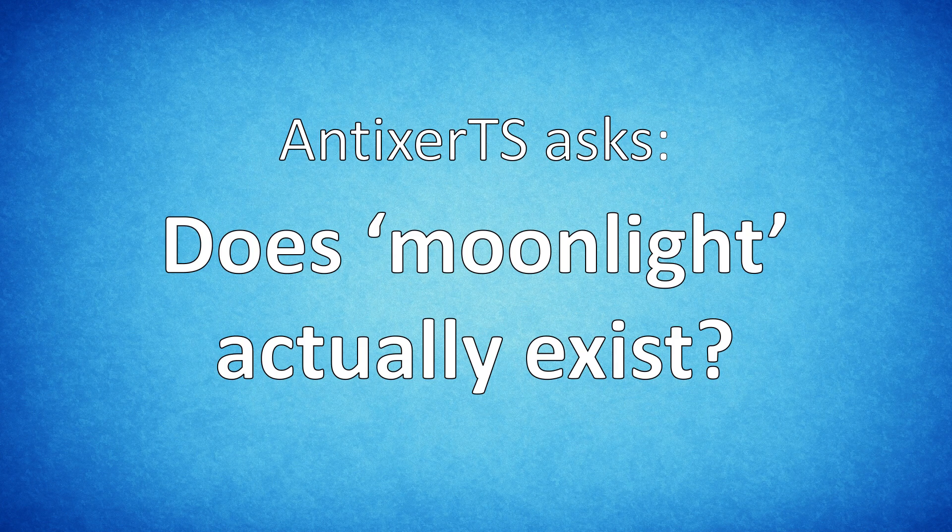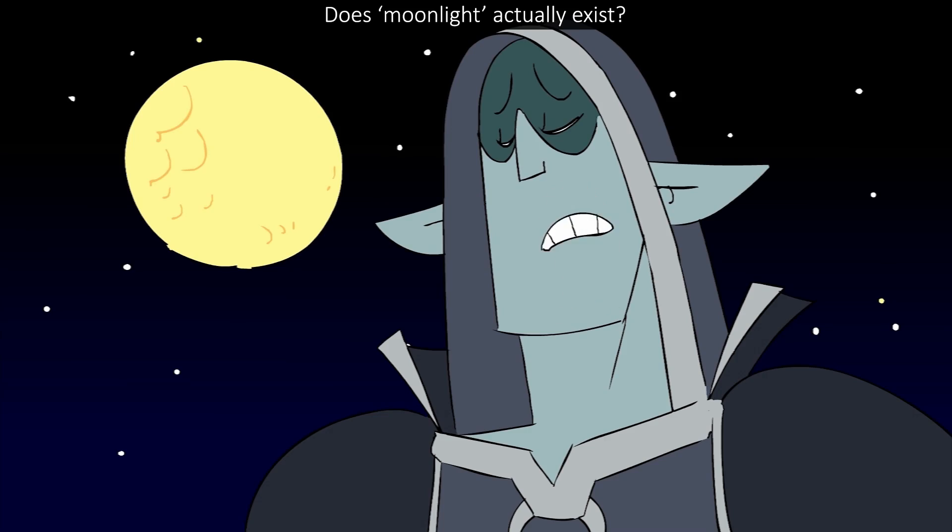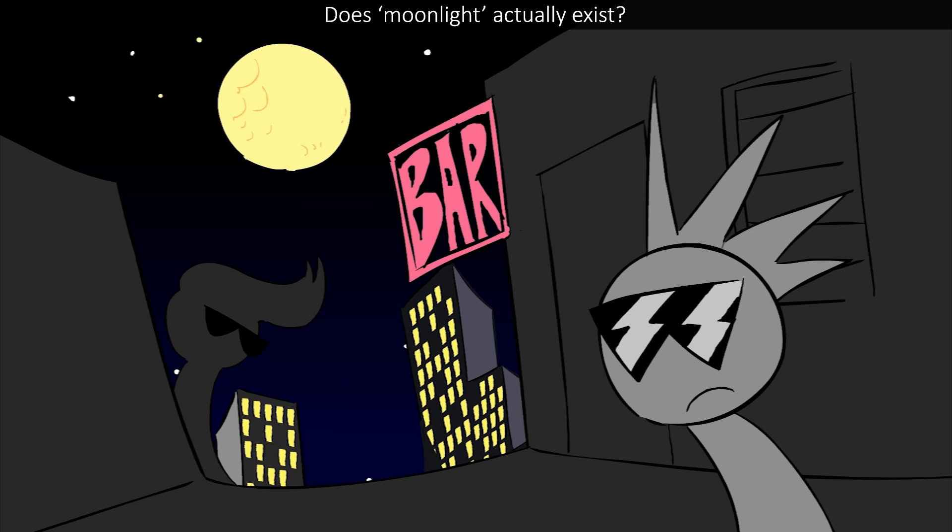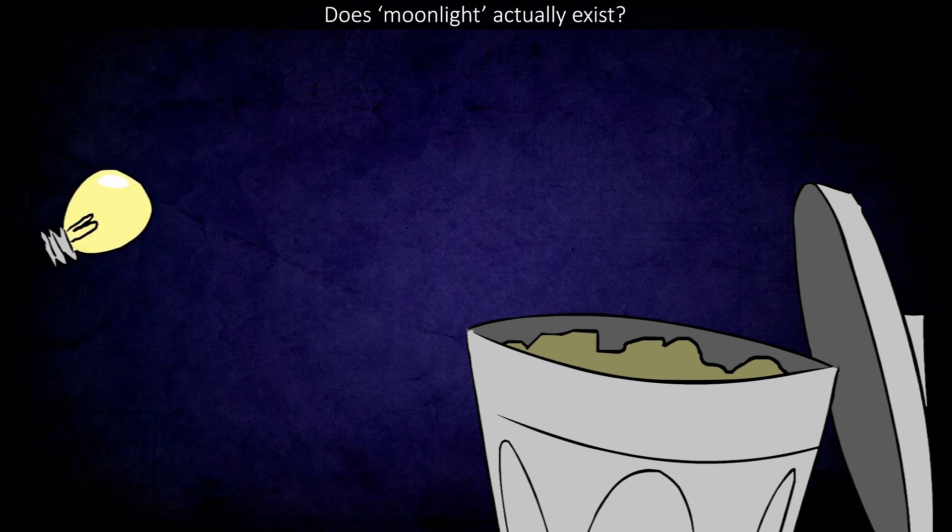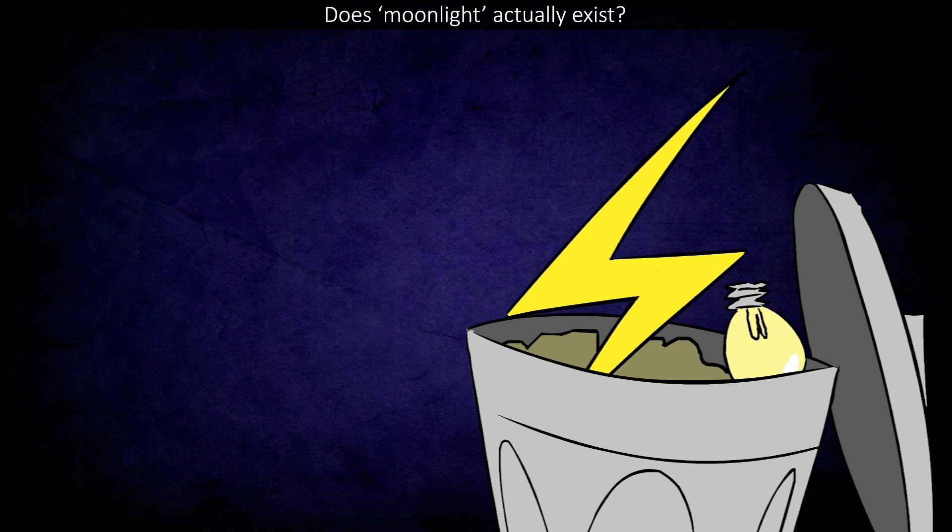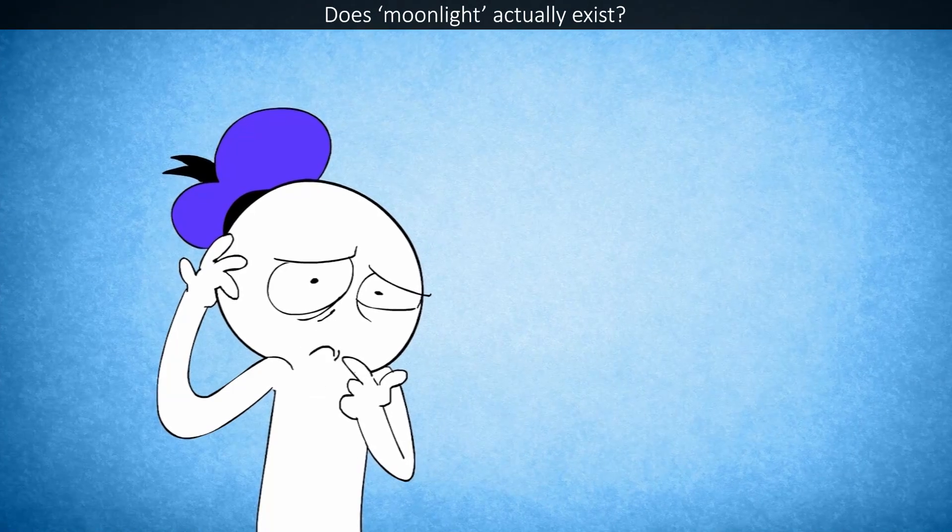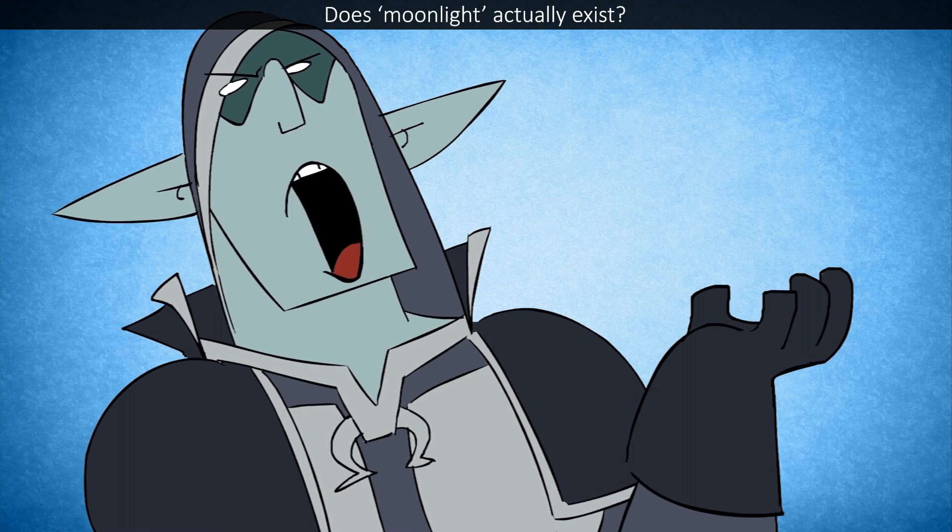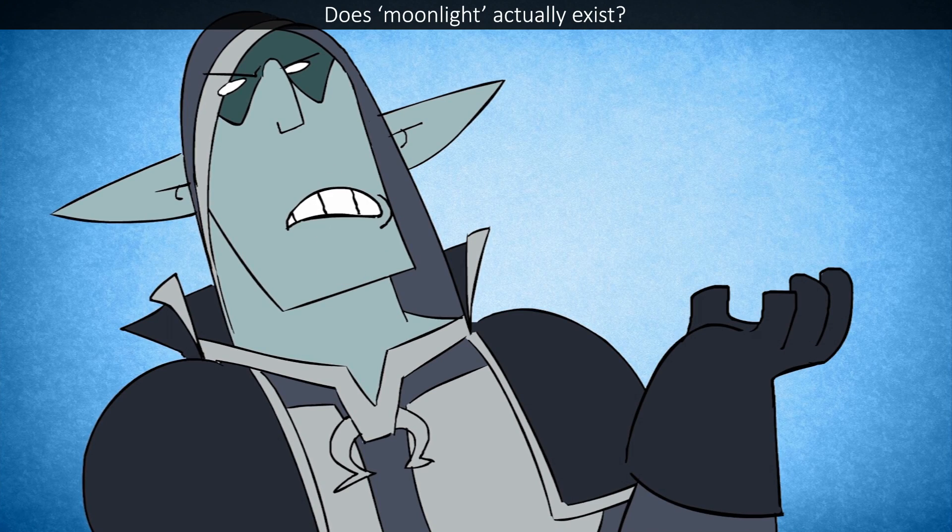And TixaTS asks, does moonlight actually exist? Of course it does, how else are you supposed to see things at night? We invented the moon back in the 1980s so that we can save money on light bulbs and electricity. But NASA flew to the moon in the 1960s, how would they do that if it didn't exist?